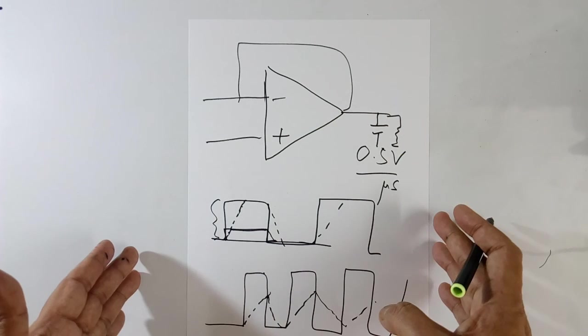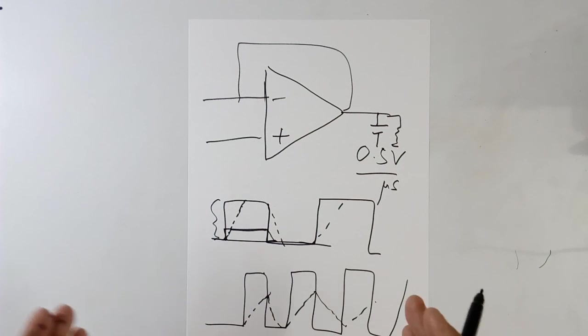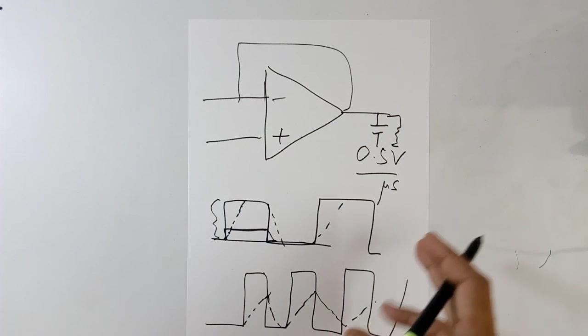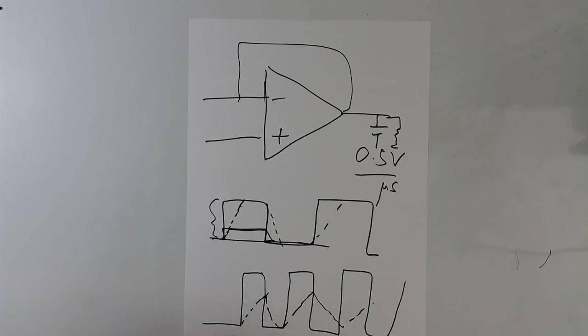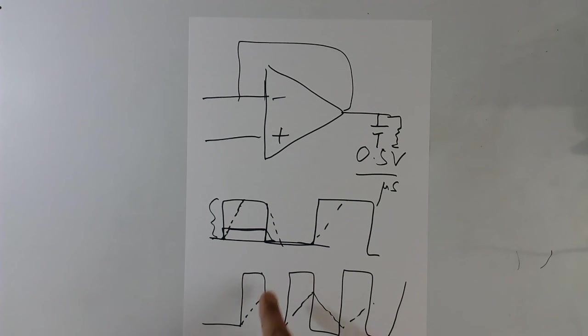So linear IC operates above certain frequency only, because of many reasons. One of them is slew rate. So this frequency has to be slower, otherwise you will not get proper output.